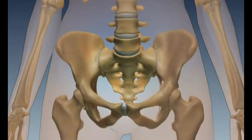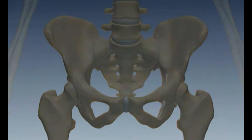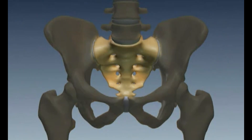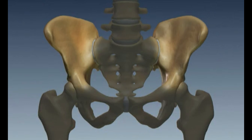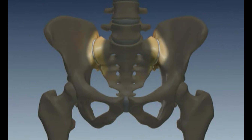The sacroiliac joint is a joint that connects the base of the spine, the sacrum, to the ilium, which is a part of the pelvis. This acts to transfer weight and stability and is susceptible to wear and tear and degeneration.